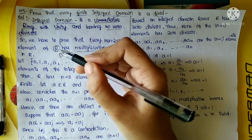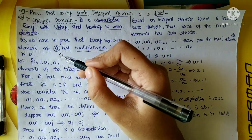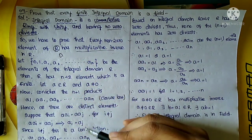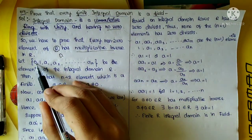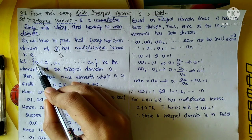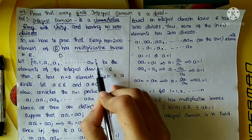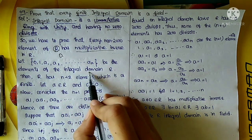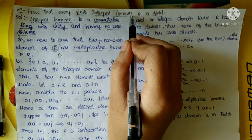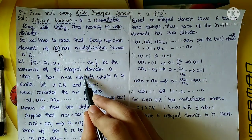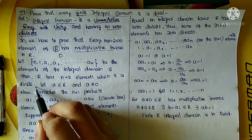So here R is the ring. Consider a finite set. The set will have values: elements are 0, 1, a1, a2, and so on — these are the elements of the integral domain R. So this is the finite set and the finite set represents the integral domain R.